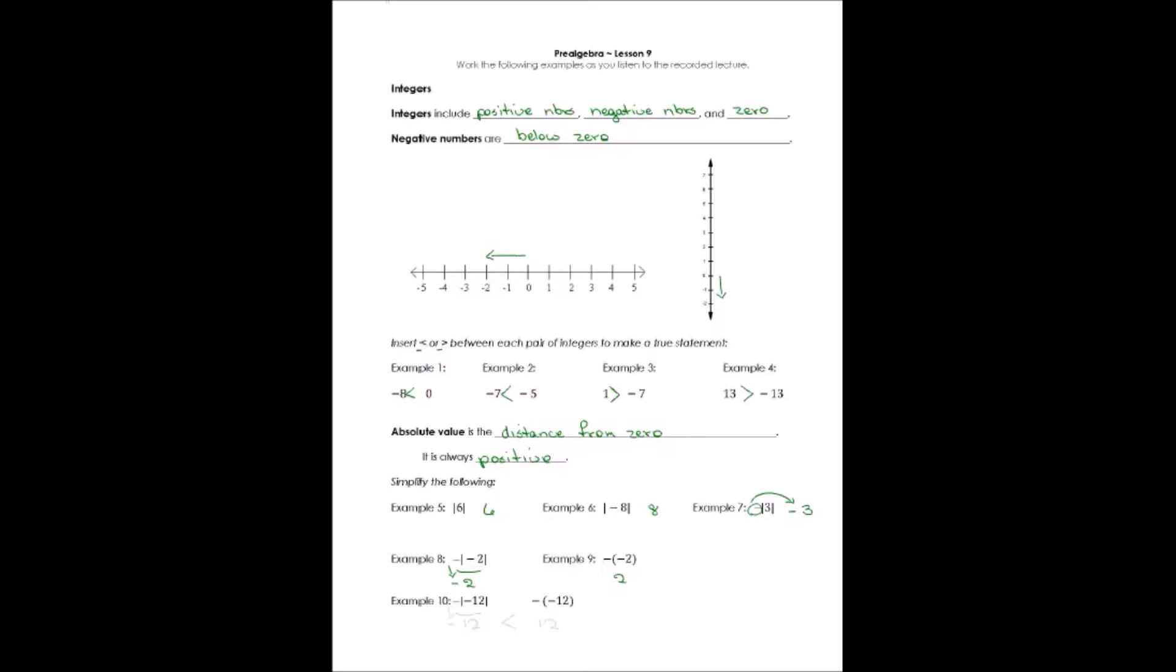Example 10, let's resolve what's inside absolute value first. Absolute value of negative 12 is 12. And then we need to just keep the negative sign that is stuck out front. And the second one, I've got negative negative 12. That's really going to be a positive 12. Now, which one of these is larger? Let's put a sign between the two of them that shows which one is smaller and which one is larger. And of course, the negative 12 would be smaller than the positive 12.